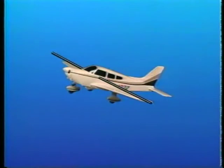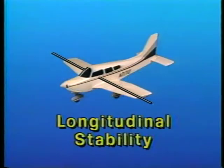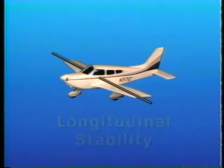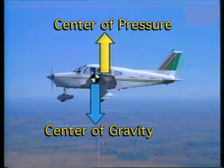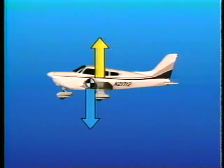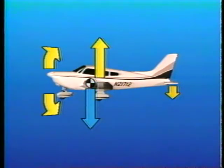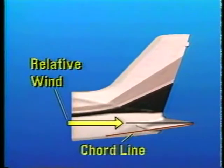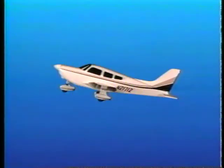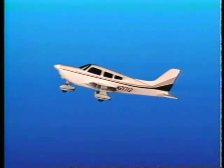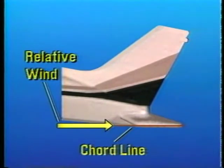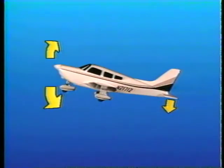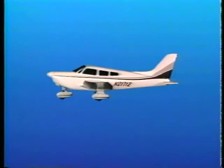Now let's look at stability about the lateral axis, which is called longitudinal stability. Longitudinal stability is normally obtained by locating the center of gravity ahead of the center of pressure, which is the point along the wing chord where lift is concentrated. This creates a slight nose heavy condition. To balance this condition, a tail down or nose up force is created by installing the horizontal stabilizer with a slightly negative angle of attack. If your airplane pitches up because of a gust of wind or momentary control deflection, the horizontal tail surface moves toward a neutral or slightly positive angle of attack. This decreases the tail down force and, because the nose heavy condition is no longer balanced, the nose will return to the trimmed condition.